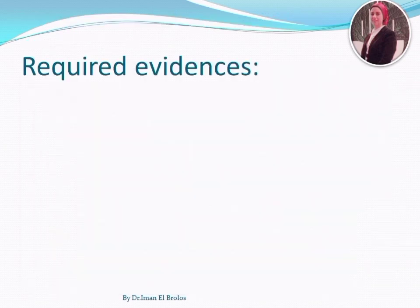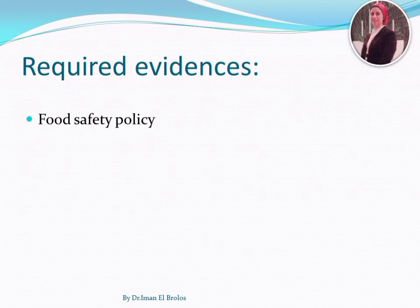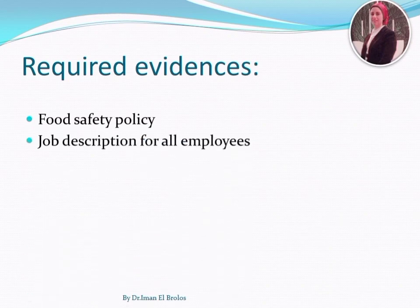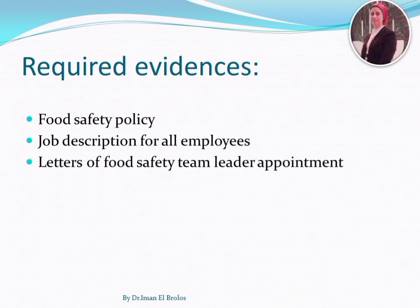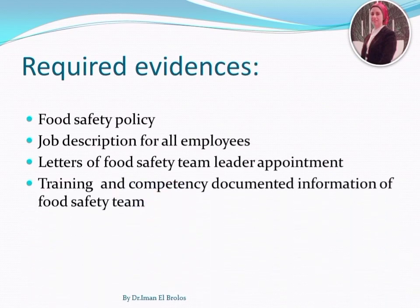You are now able to list the documented evidence required according to clause number 5: one — food safety policy; two — job descriptions for all employees; three — letters of food safety team leader appointment; four — training and competency documented information of the food safety team.